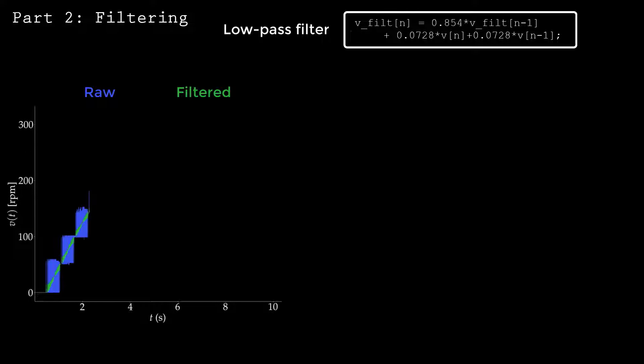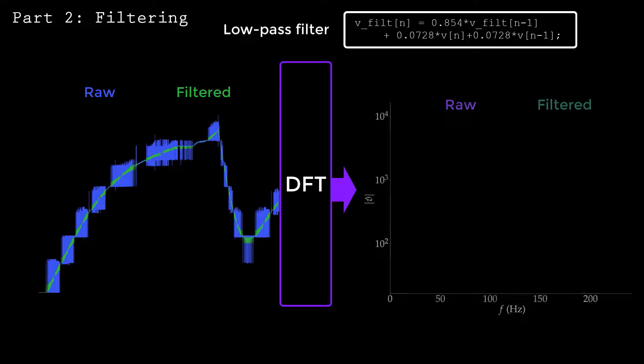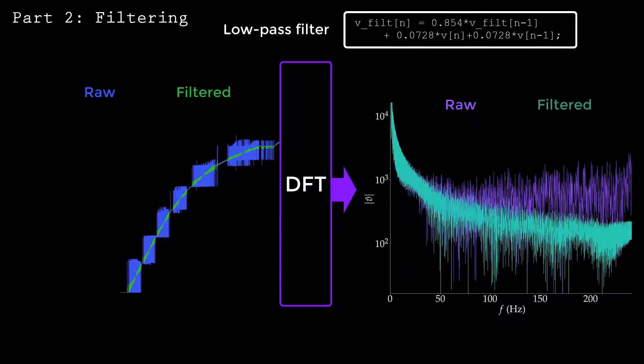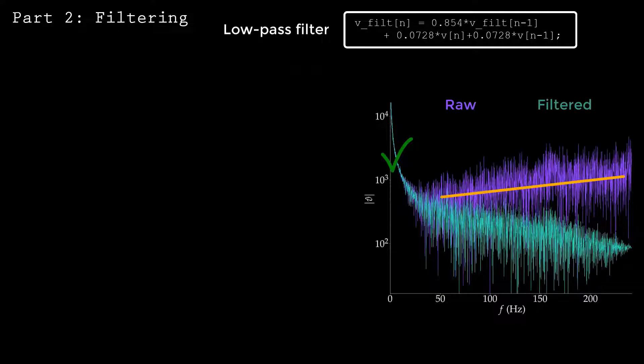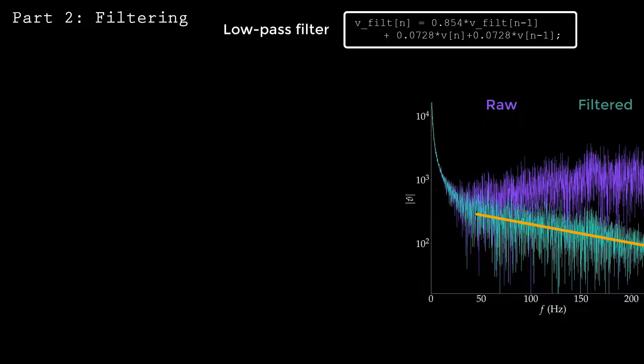Let's see if the filter works. Here I'm plotting the raw and filtered signals together. You can see that the high-frequency oscillations are substantially reduced. In the power spectrum, you can see that the low frequencies are largely unaffected. The high-frequency content has been attenuated, but not completely removed.